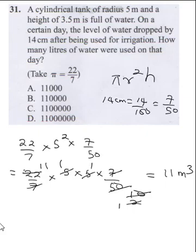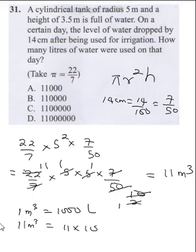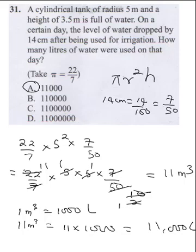We are asked to find the answer in liters. Since 1 meter cubed equals 1000 liters, 11 meter cubed equals 11 times 1000, which gives 11,000 liters. So the correct answer is A.